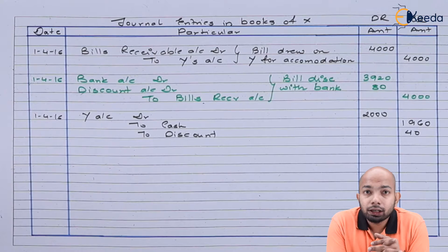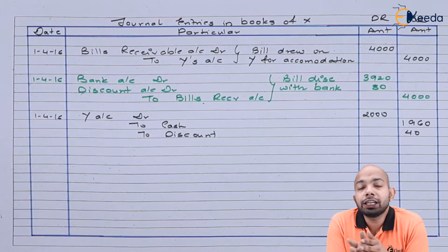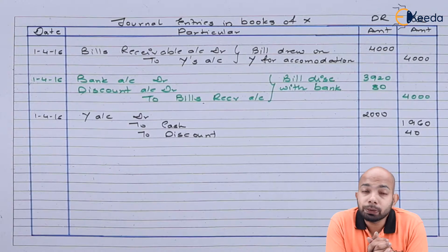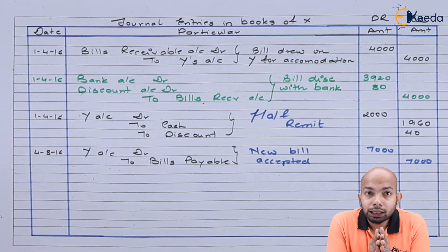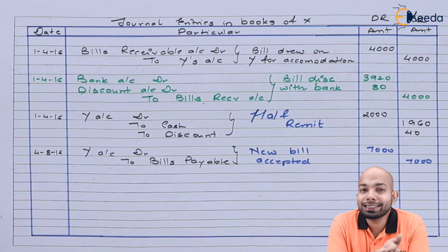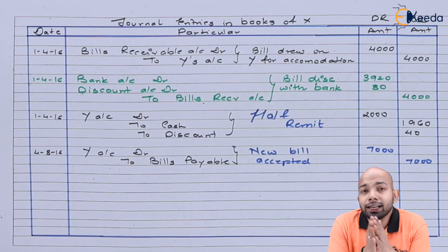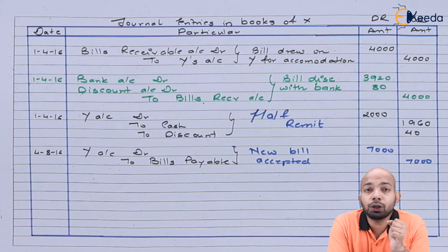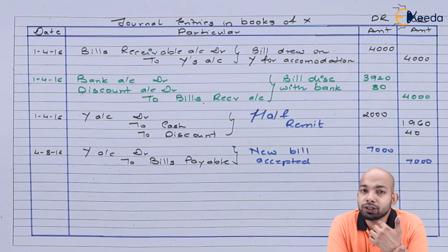After 3 months, on 4th August — adding 3 days — X couldn't pay up the amount, so Y drew a bill on X and X accepted it. We have to record the acceptance entry, so it will be Y to Bills Payable Account. The new bill was accepted for Rs 7,000. Out of that, Rs 1,300 was sent by Y. The amount received was after getting the bill discounted. Y discounted the bill and sent Rs 1,300. We have to pass that entry and include the discount column because Y discounted it at Rs 400, since he got Rs 6,600 for Rs 7,000.